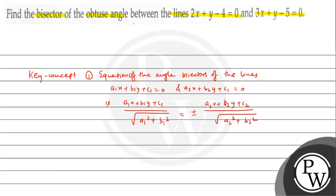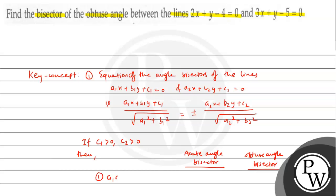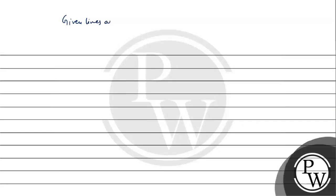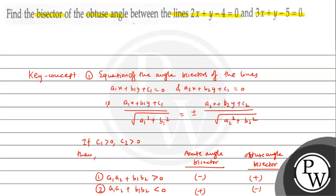Now, to determine the acute angle bisector and obtuse angle bisector: if c1 > 0 and c2 > 0, and if a1a2 + b1b2 > 0, then the plus sign gives the obtuse angle bisector and the minus sign gives the acute angle bisector. If a1a2 + b1b2 < 0, then the plus sign gives the acute angle bisector and the minus sign gives the obtuse angle bisector.